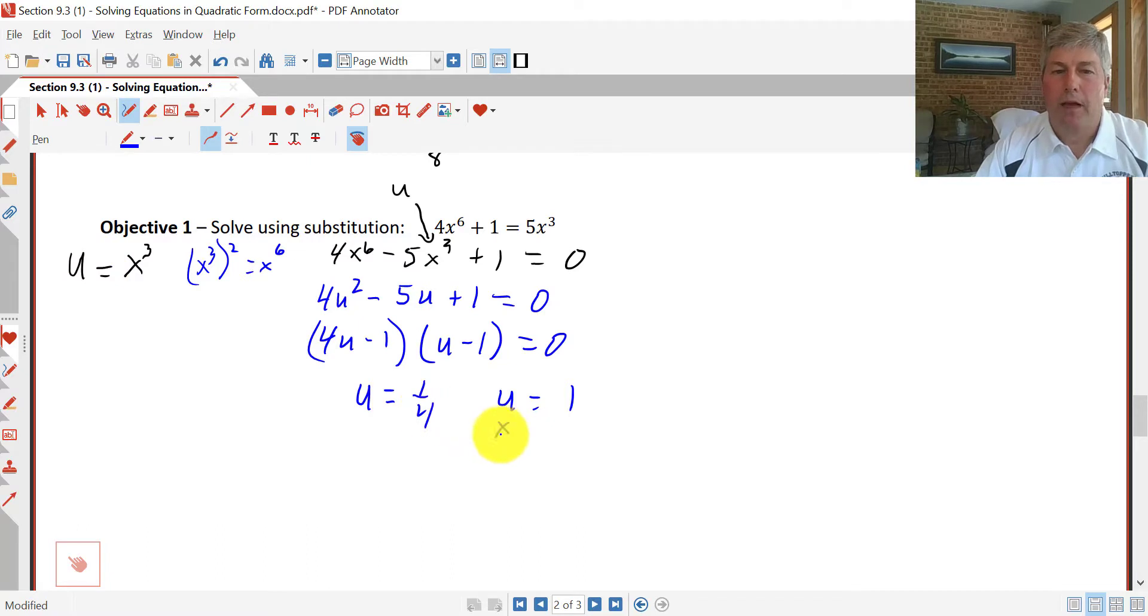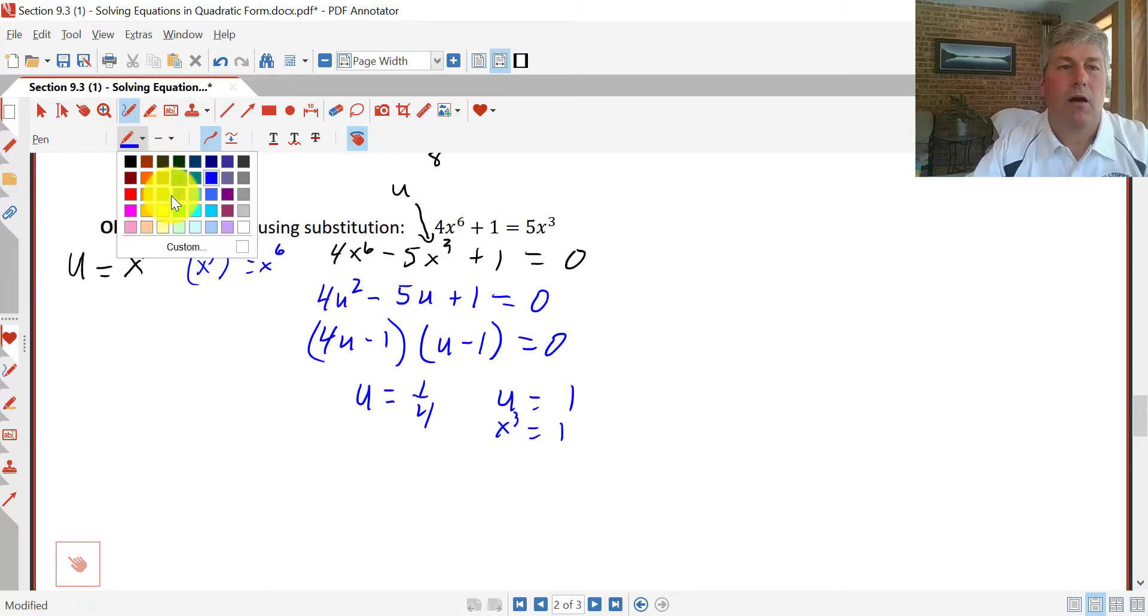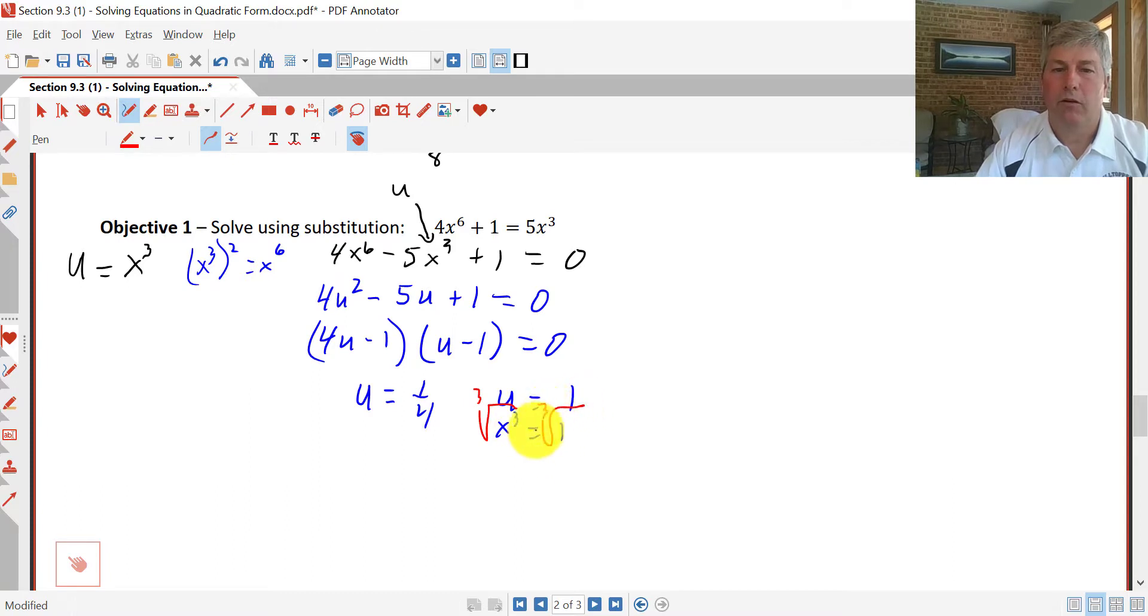Remember, u is x³. x³ = 1. But we don't want x³. We want x. So now we have to take the cube root of both sides. So I'm going to cube root each side. Well, fortunately, the 1 is easy. The cube root of x³ is x. The cube root of 1 is 1. So that one works out pretty nicely.